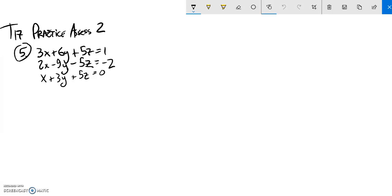We are going to solve this 3x3 system of equations, and I'm going to write it as a matrix. So 3, 6, 5, 1, 2, negative 9, negative 5, negative 2, negative 2, and then 1, 3, 5, 0.